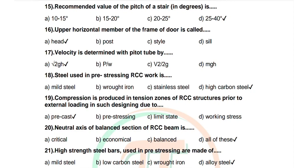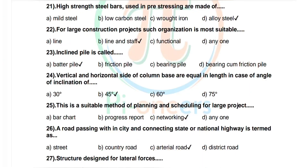Question 19 (continued): Compression is produced in tension zones of RCC structure prior to external loading — options: pre-cast, pre-stressing, limit state, working stress. Correct answer is pre-stressing. Question 20: The neutral axis of a balanced section of RCC beam is. Options: critical, economical, balanced, all of these. Correct answer is all of these.